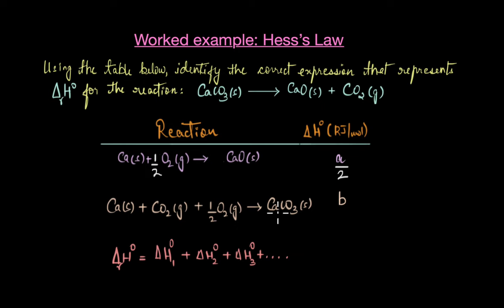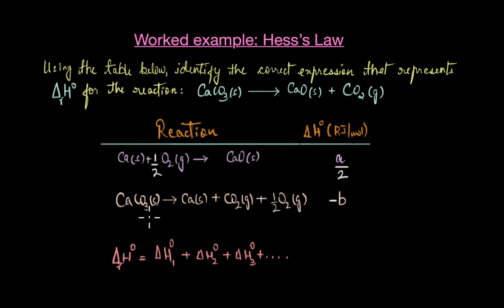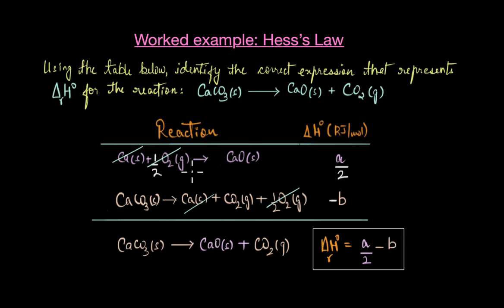Looking at the second equation, CaCO₃ appears on the product side, whereas in our desired equation it is on the reactant side. So this equation needs to be reversed, and when we do that the sign of ΔH° also changes — from +b to −b. Now CaCO₃ is on the reactant side with ΔH° = −b. When we add the two equations, certain terms cancel and we get the desired equation. The standard enthalpy change is ΔH°r = a/2 − b.